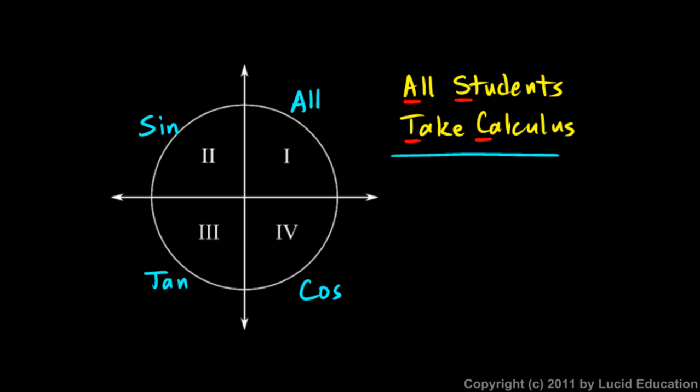So the phrase A, S, T, C tells you where each function is positive: all three are positive in quadrant 1; sine is positive in quadrant 2; tangent in quadrant 3; and cosine in quadrant 4. And if you get the chance, I would encourage you to take calculus — it's great stuff.